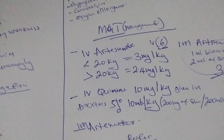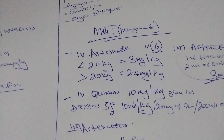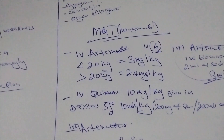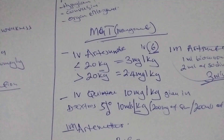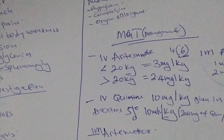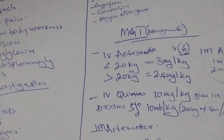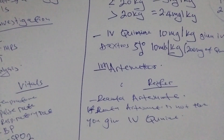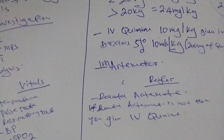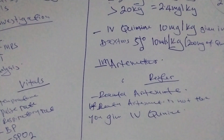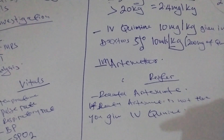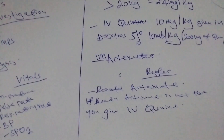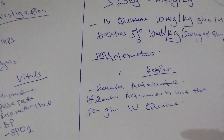If IV artesunate is not available or you cannot access the line, you give IM artesunate. If you cannot manage the patient in a lower facility, you give the pre-referral treatment — that is rectal artesunate — and if rectal artesunate is not there, you give IV quinine and then refer the patient. That is all. Thank you for watching and see you in the next one.